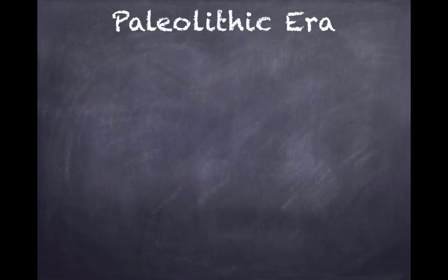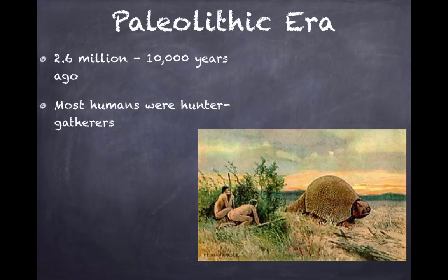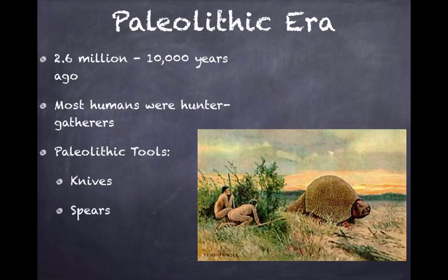Let's start off with the Paleolithic era. This lasted from 2.6 million to 10,000 years ago, and it was when most humans were hunter-gatherers. They hunted all sorts of animals, including giant hard-shell animals pictured here. Hunter-gatherers used many different tools such as knives, spears, bows and arrows, and most importantly fire, which was used to keep warm, as defense against animals, and to clear lands.